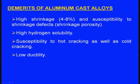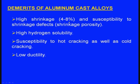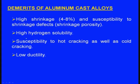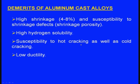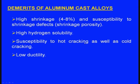These are the demerits of aluminum cast alloys. High shrinkage — the shrinkage will be nearly 4 to 8 percent — and it is highly susceptible to shrinkage defects and also shrinkage porosity. It has the highest hydrogen absorptivity; it absorbs hydrogen rapidly. There is susceptibility to hot cracking as well as cold cracking. During solidification this hot cracking develops, and cold cracking means during solidification it absorbs hydrogen, which will be atomic hydrogen because of the high temperature.